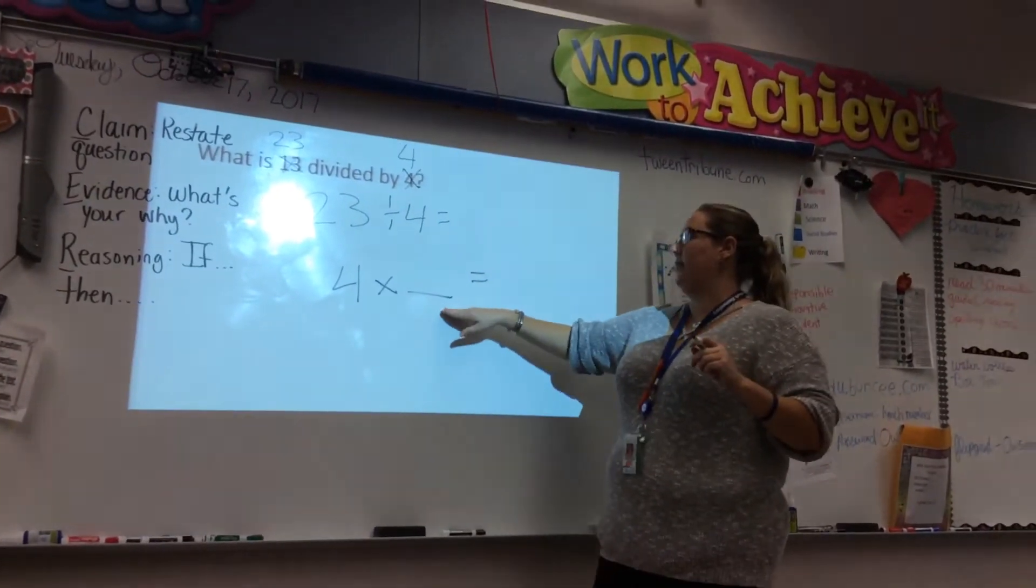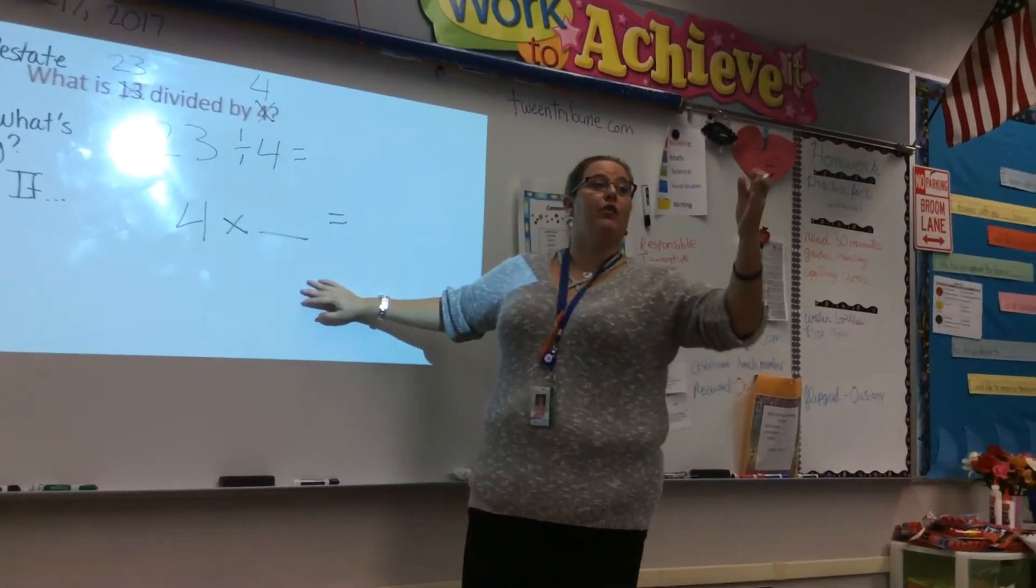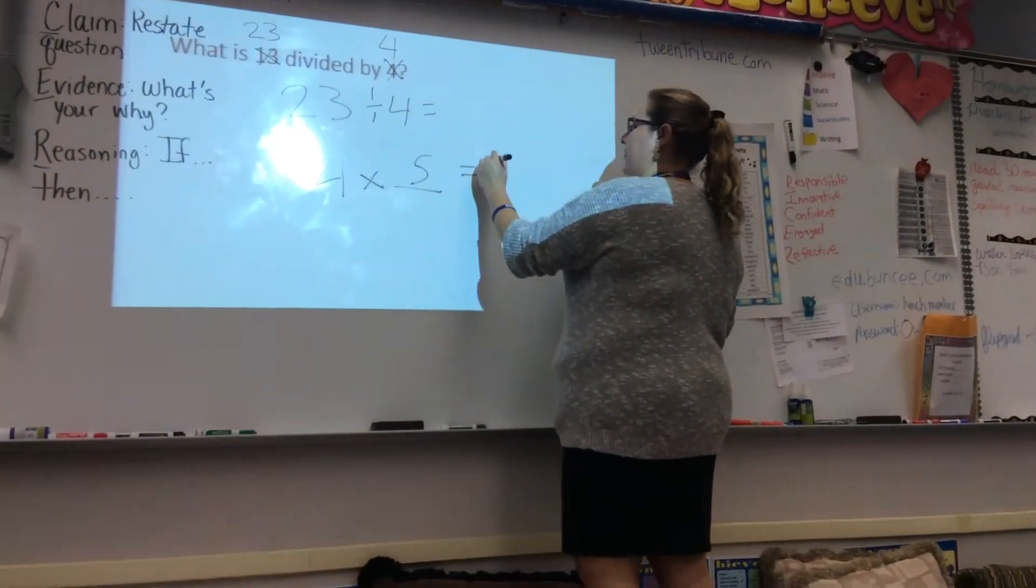All right, I'm doing 4 times something to get me close to 23. What can I do closest without going over? Yes sir. You could do 4 times 5. 4 times 5 is 20.